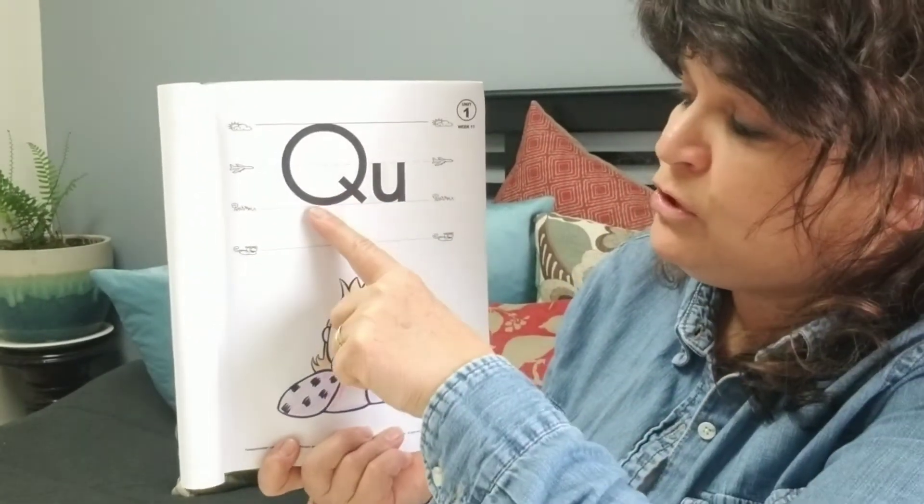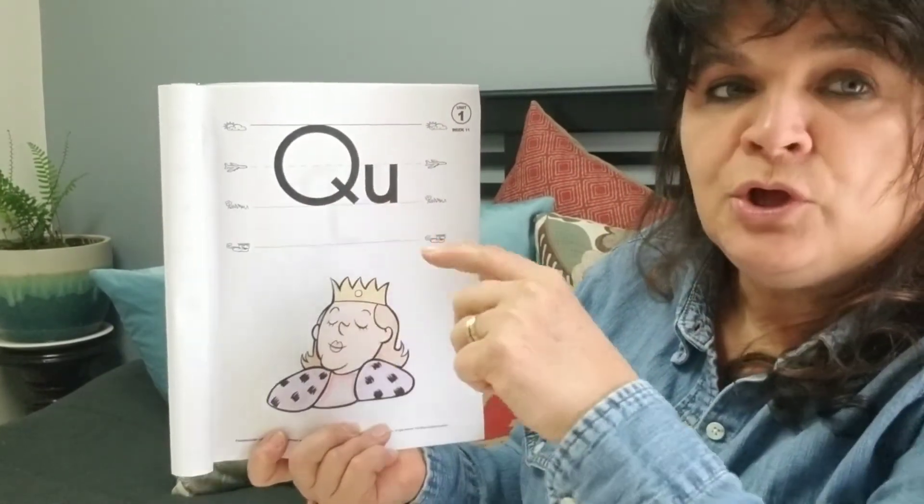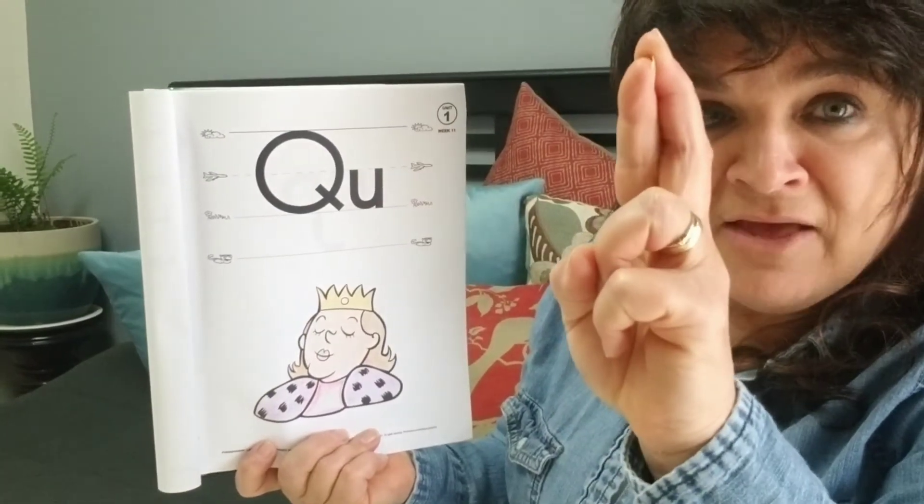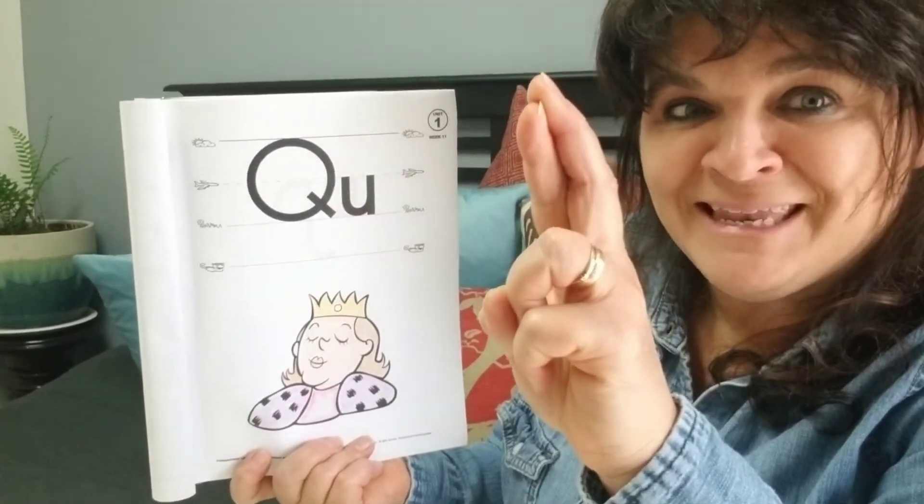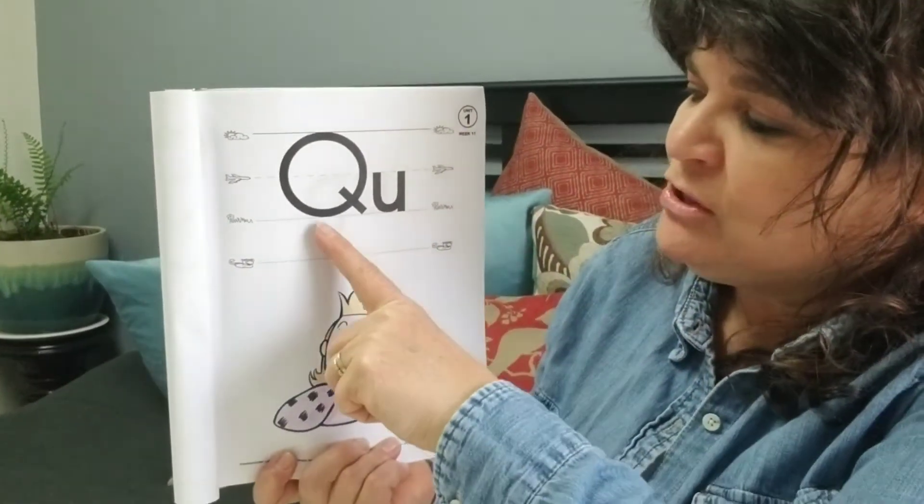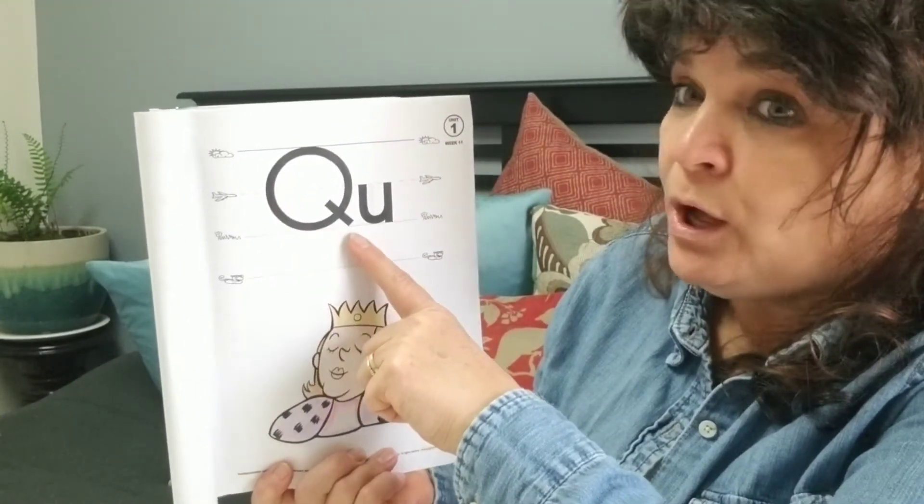These are the letters Q, U. Q and U are always together. They are called the married letters in English. They make the sound quh. Quh.